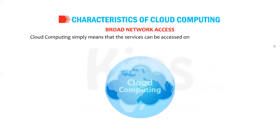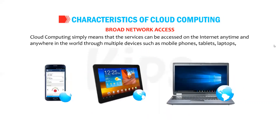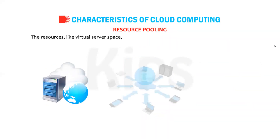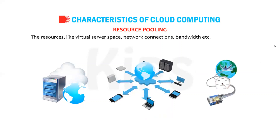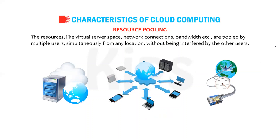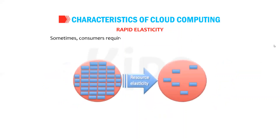The second characteristic is broad network access — cloud computing means services can be accessed on the internet anytime and anywhere in the world through multiple devices such as mobile phones, tablets, and laptops. The third characteristic is resource pooling — resources like virtual server space, network connections, and bandwidth are pooled by multiple users simultaneously from any location without interference. The fourth characteristic is rapid elasticity — consumers sometimes require additional resources in a short period of time.